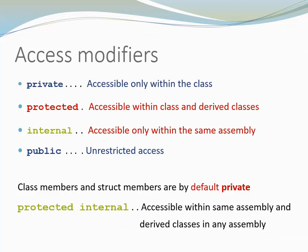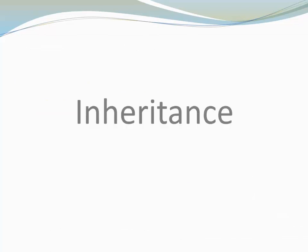It is possible to combine the accessibility of both protected and internal. You do that by using both keywords, protected and internal, next to each other. In that case, a class member can be accessed from anywhere within the assembly where the class was declared and also from any derived class, even if the derived class was declared in another assembly.